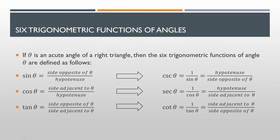So if you're familiar with SOH-CAH-TOA: sine is opposite over hypotenuse, cosine is adjacent over hypotenuse, and tangent is opposite over adjacent. And for cosecant, secant, and cotangent, remember that cosecant is 1 over sine, secant is 1 over cosine, and cotangent is 1 over tangent — you just have to switch the numerators and denominators. That's how you'll easily remember the six trigonometric functions.